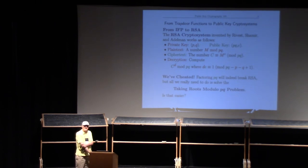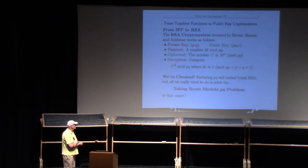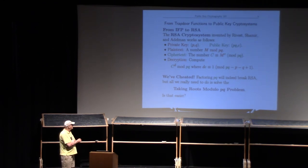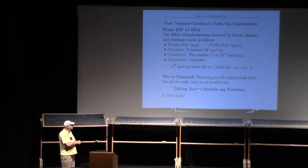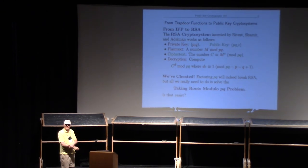I've cheated a little bit here, because the underlying hard problem is not factoring. The underlying problem is: if I give you m to the e, take the eth root mod pq and find m. So the actual RSA is based on the problem of finding eth roots mod pq.